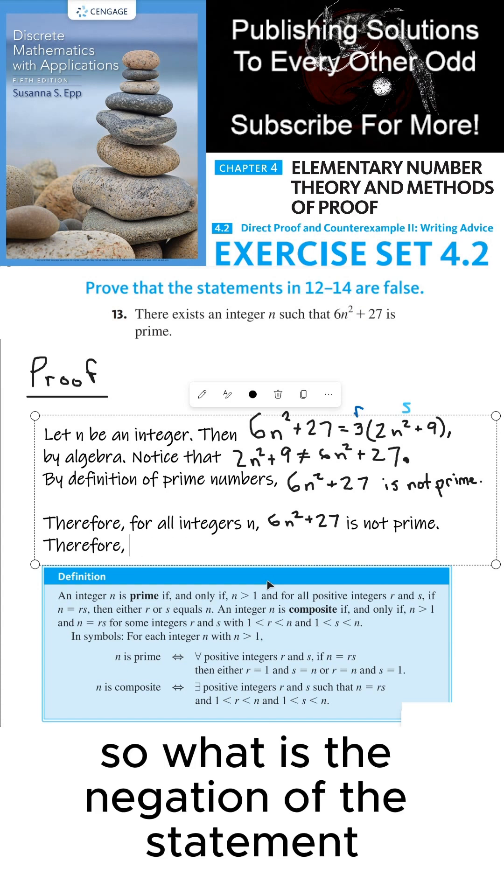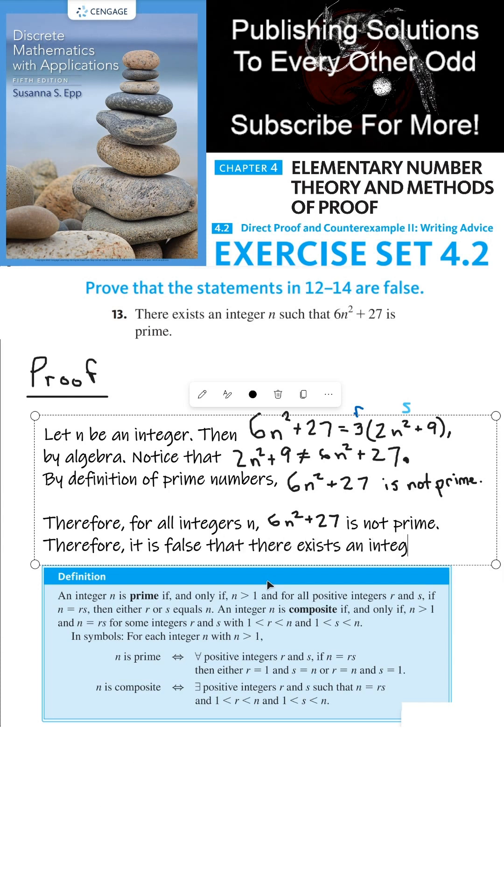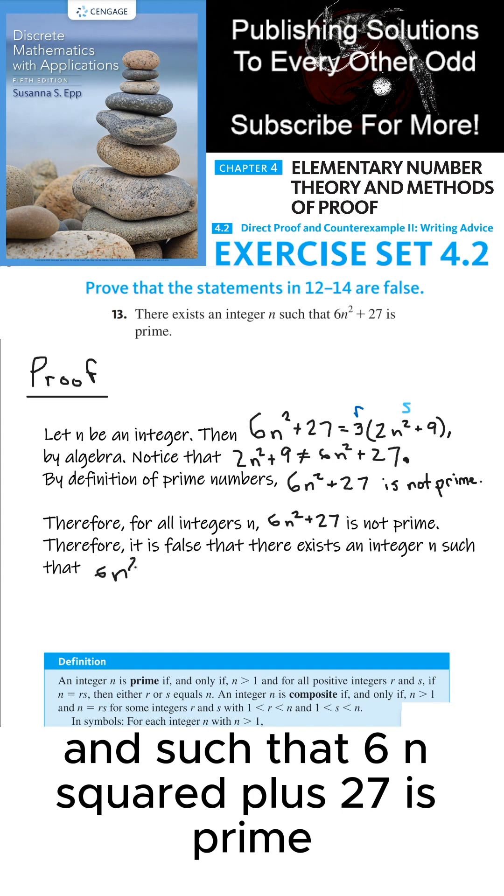So what is the negation of the statement? It is false that there exists an integer n such that 6n squared plus 27 is prime.